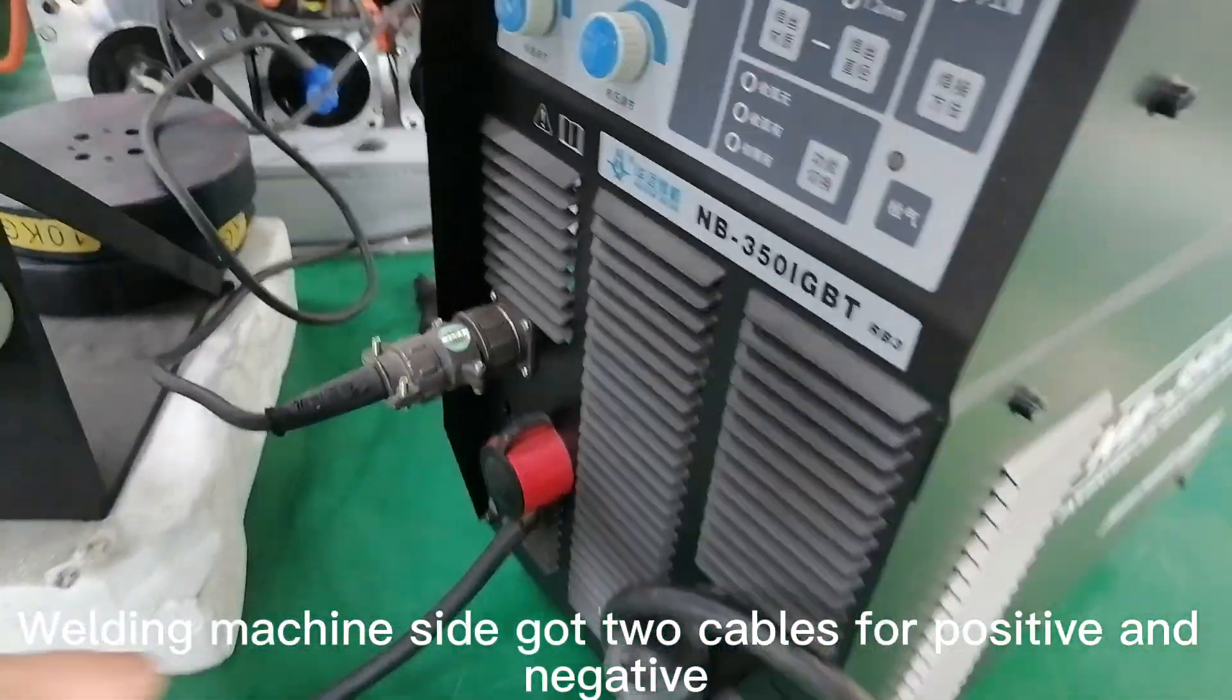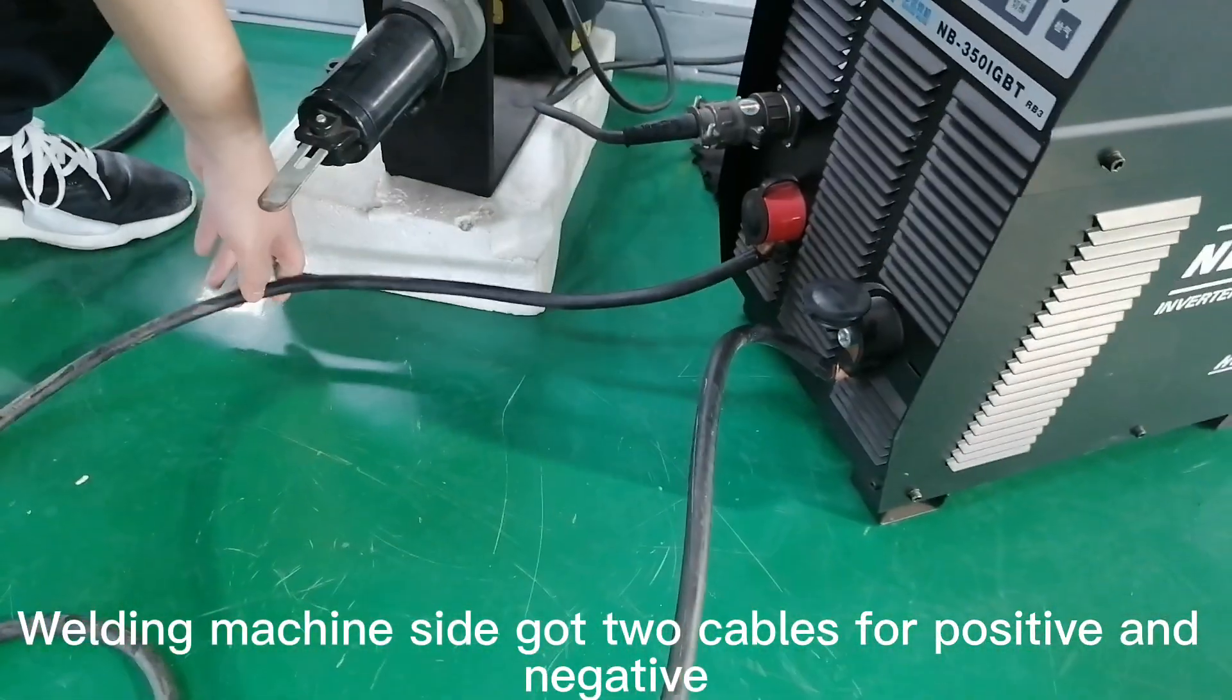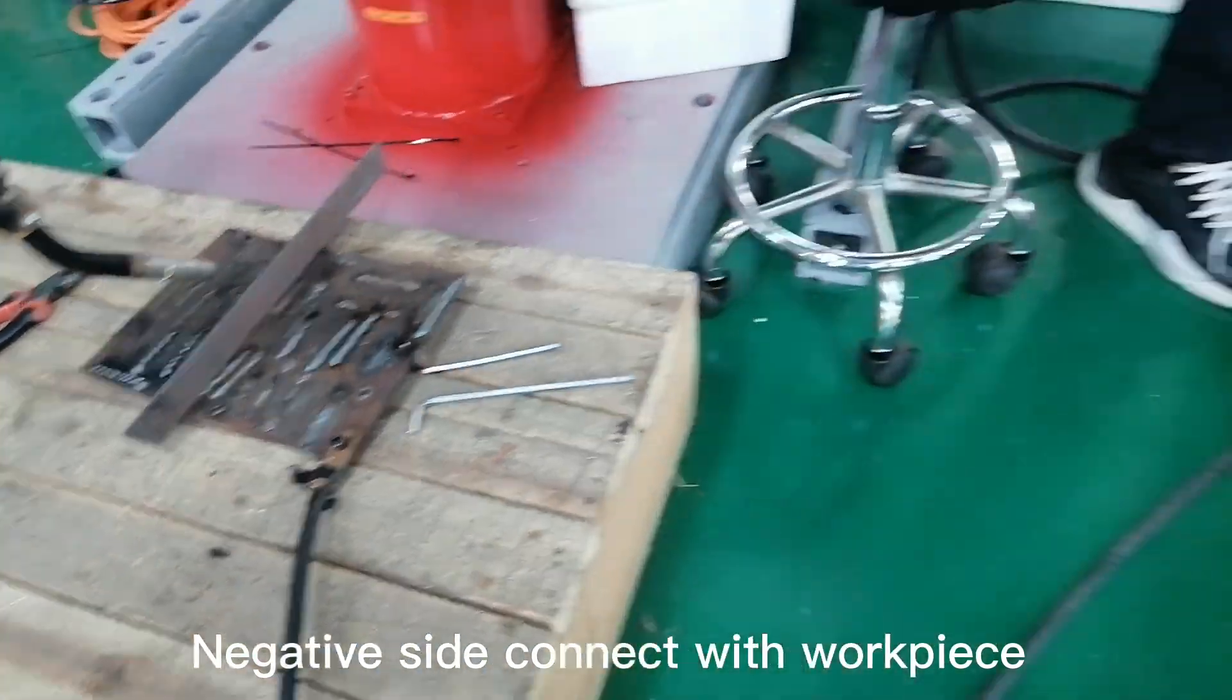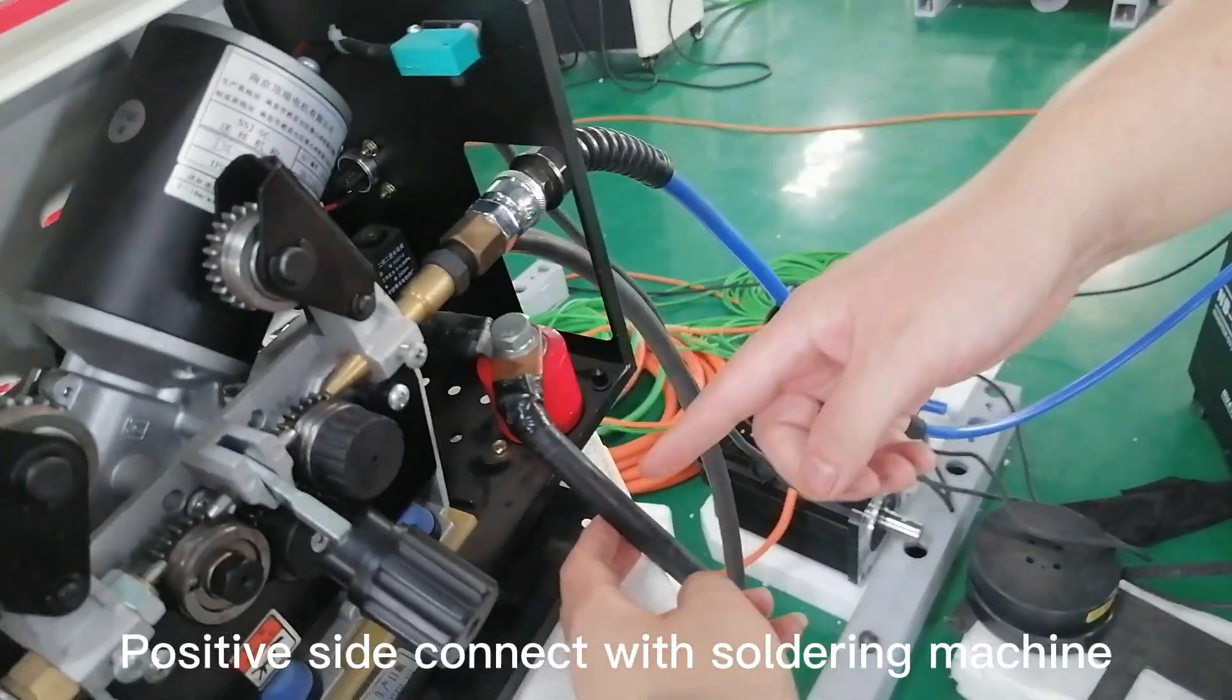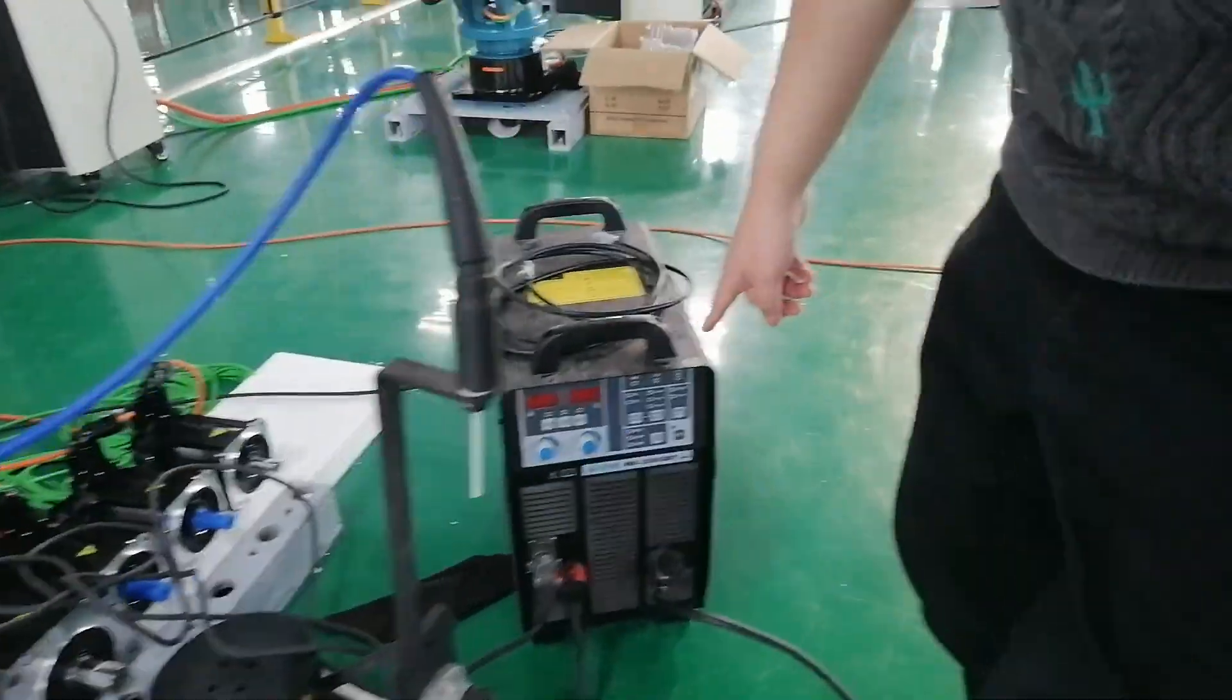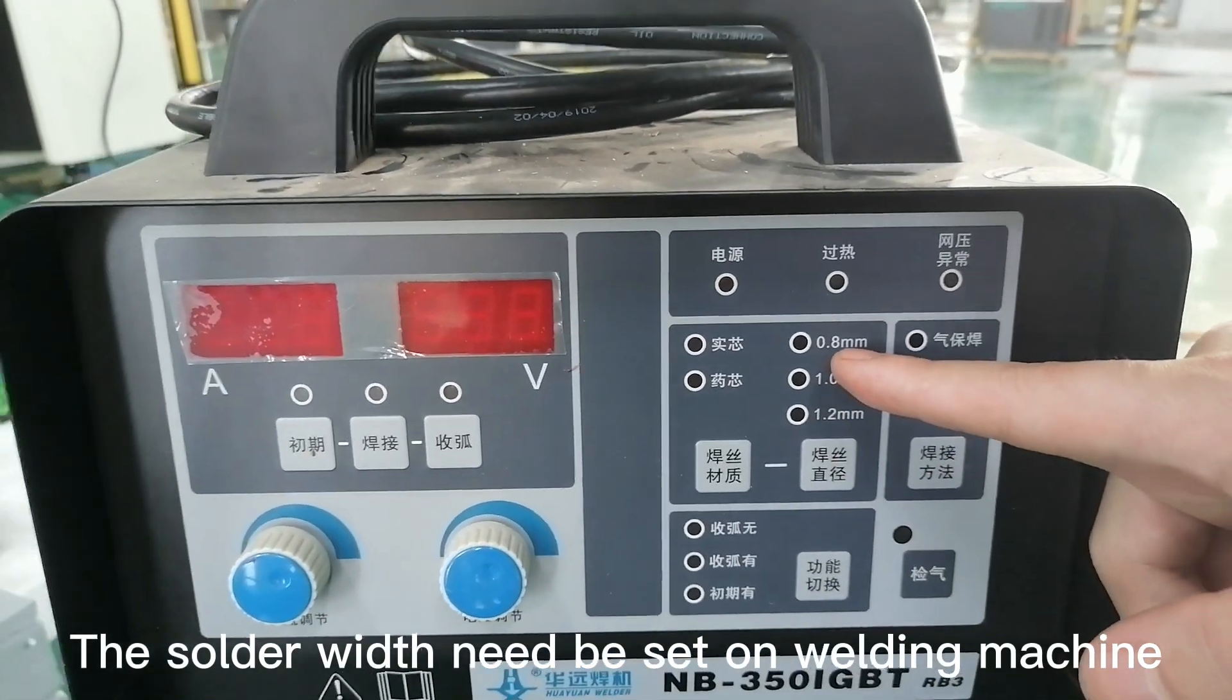Welding machine side got two cables for positive and negative. Negative side connect with workpiece. The solder wire need be set on welding machine.